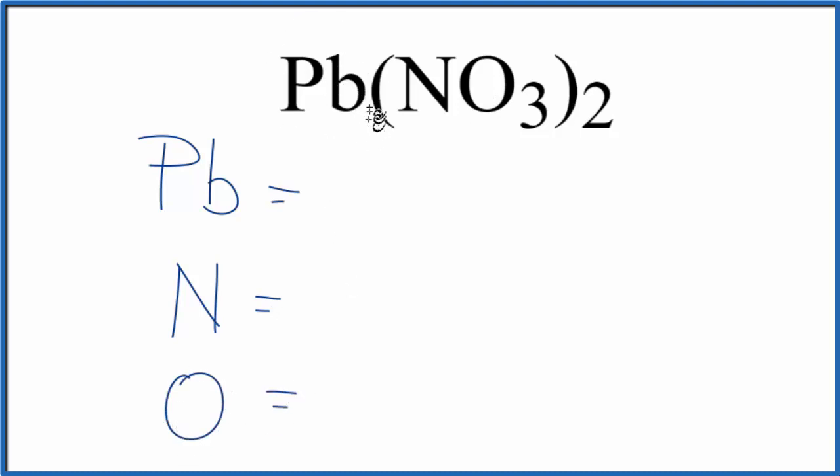For the lead, there's nothing written after. There's no subscript, so we assume that'll be one. So we have one Pb atom here. For nitrogen, there's also nothing written, so we're going to put a one here. But with nitrogen, it's within these parentheses. So everything within the parentheses gets multiplied by the subscript outside.